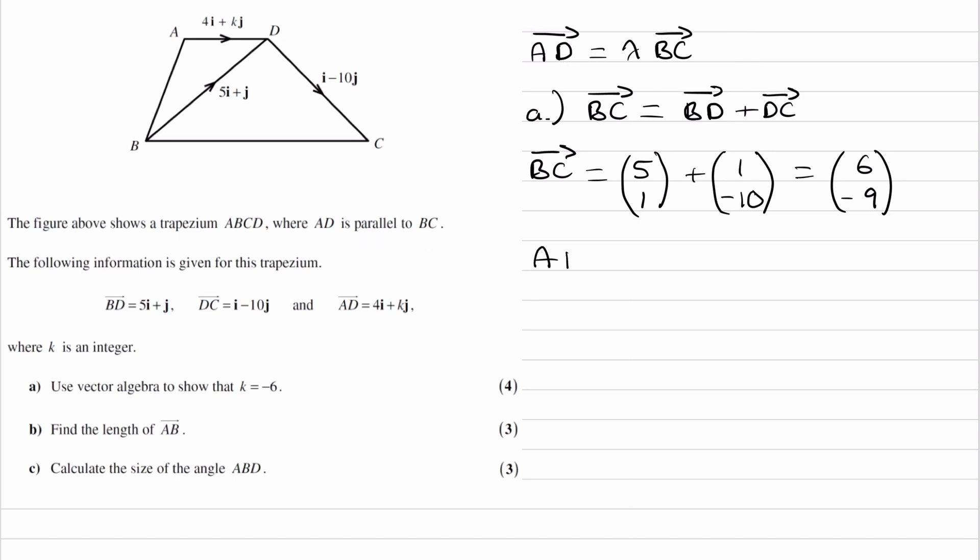So then we can say that AD, which is actually equal to 4K. So this is AD. And that's equal to lambda. So I'm just using this equation up here. Lambda times BC. BC is 6, minus 9. And then I can simplify the right-hand side. So I multiply this out, so we get 6 lambda, minus 9 lambda.